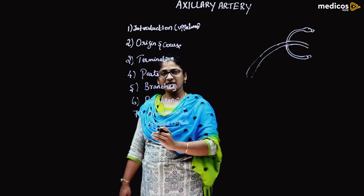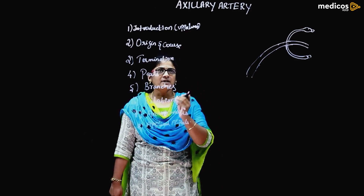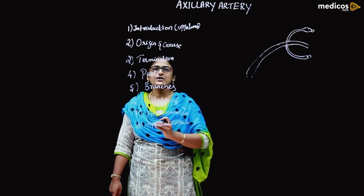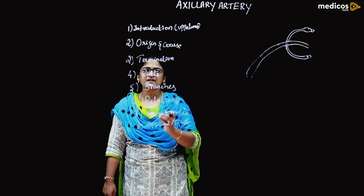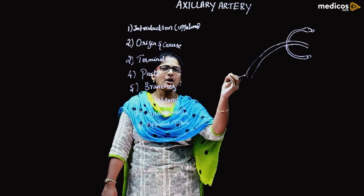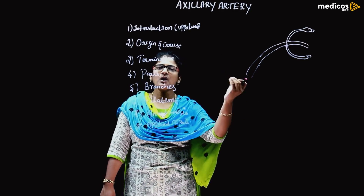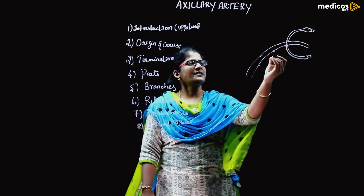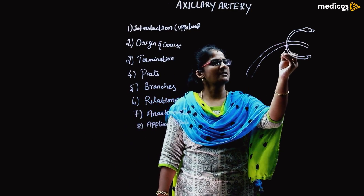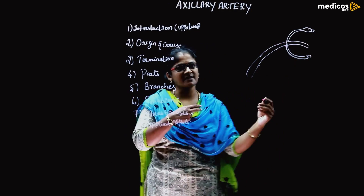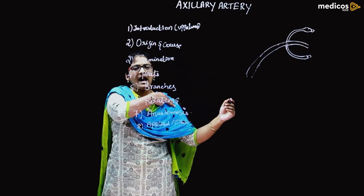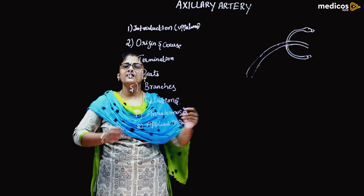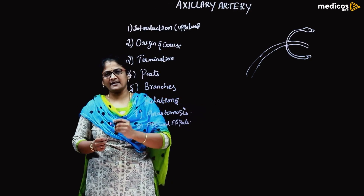So how we can write the origin: the axillary artery is the continuation of the subclavian artery at the level of the outer border, or the lateral border, of the first rib. It runs outwards, forwards, and laterally to go close to the anterior wall of the axilla.